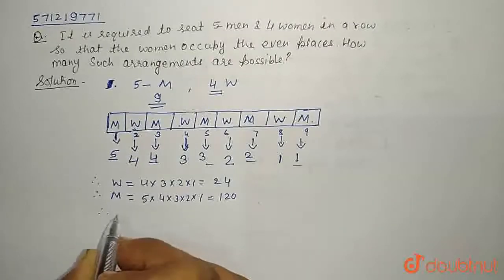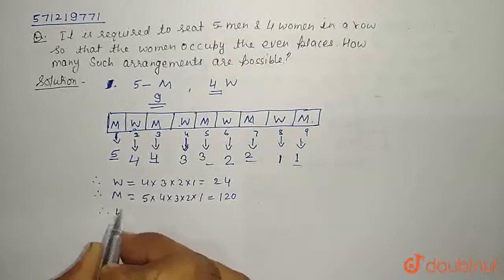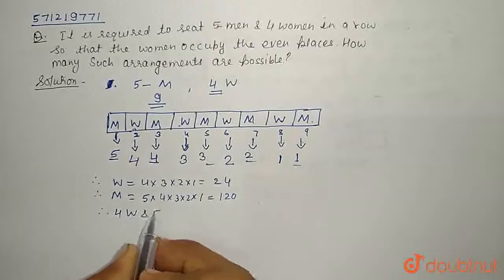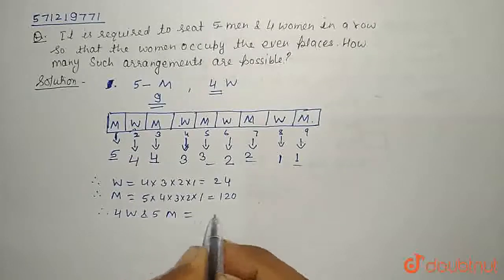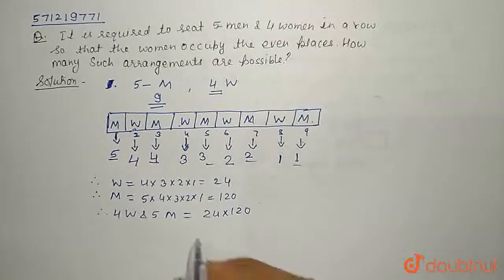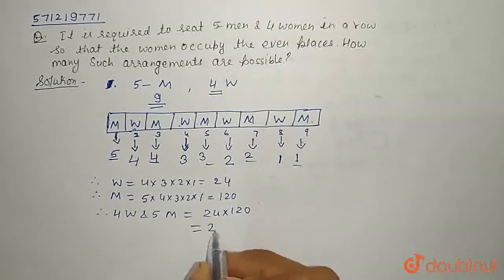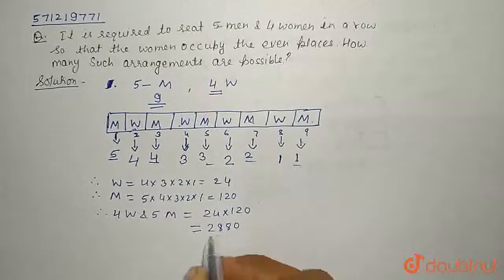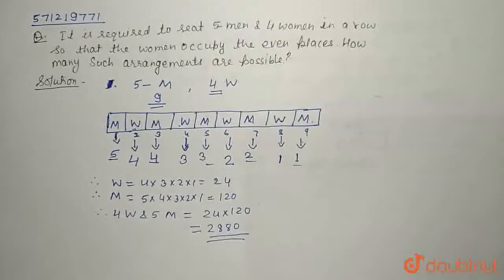Therefore to arrange 4 women and 5 men by multiplication rule is nothing but 24 into 120 way. If we simplify this, we will get 2880. Hence total 2880 are such possible ways.